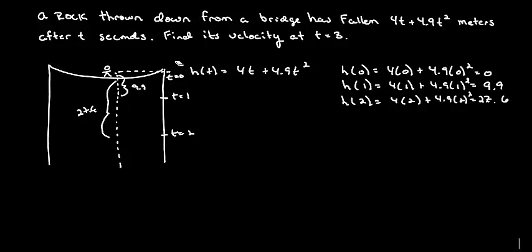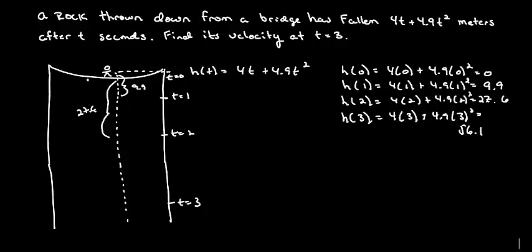And I should actually extend my bridge down to make this a little bit more accurate. And at t equals 3, the distance the rock has fallen is 4 times 3 plus 4.9 times 3 squared. Now, guys, these are actual laws. We're neglecting air resistance, but this isn't a bad problem. It's really quite accurate here. So, this gives me 56.1 meters.